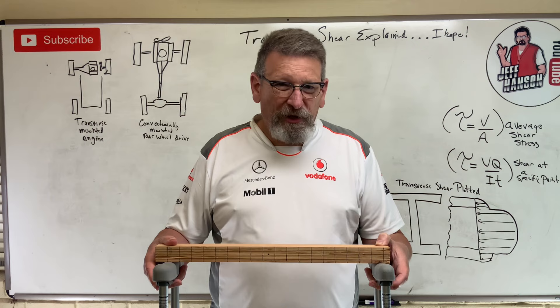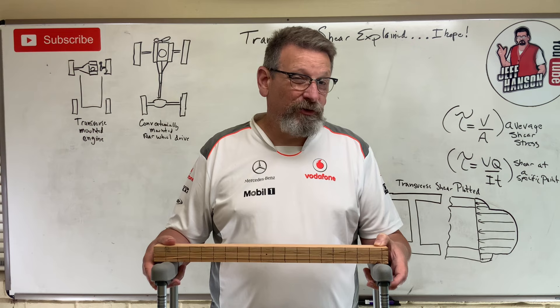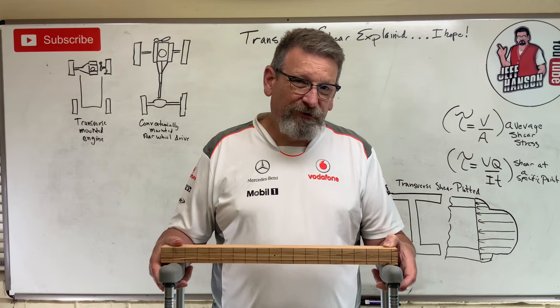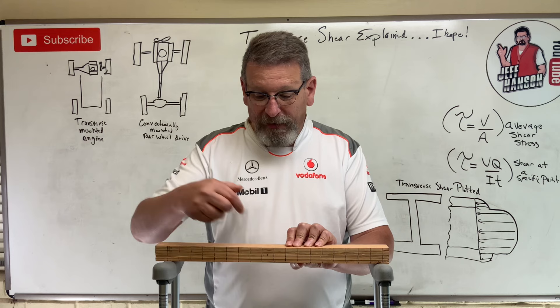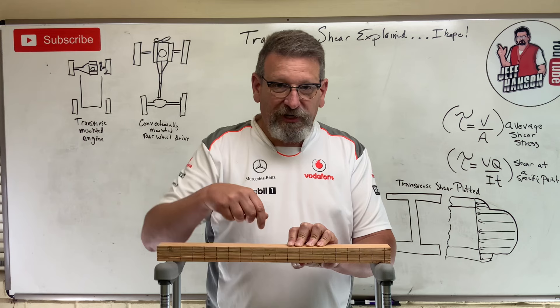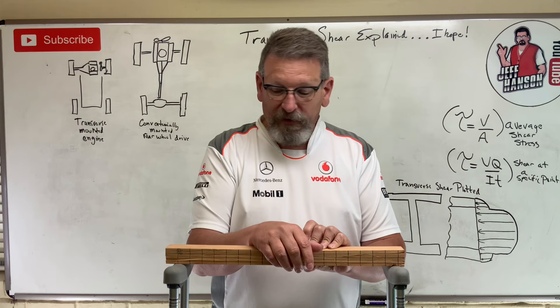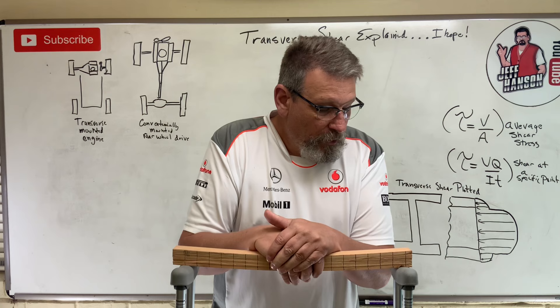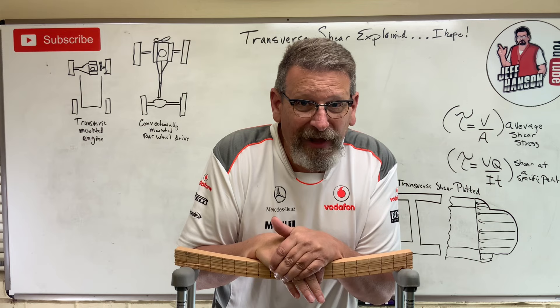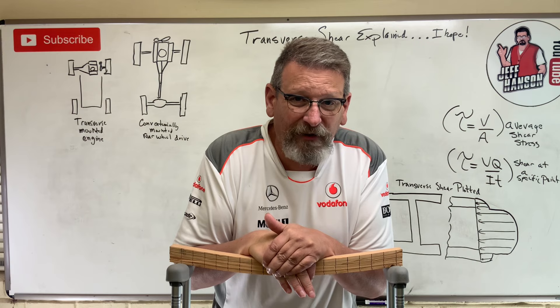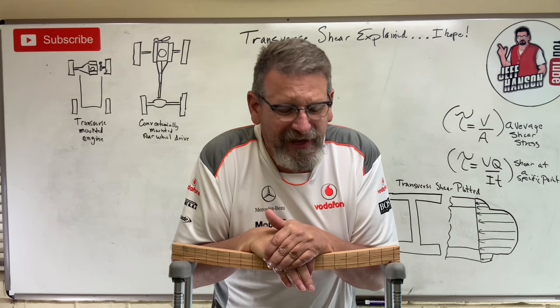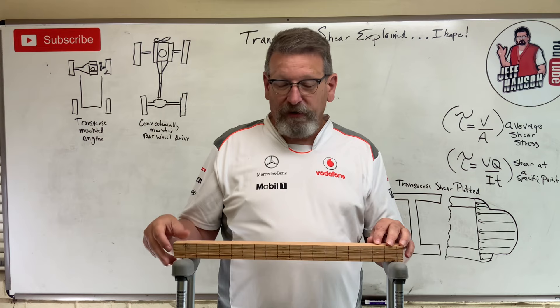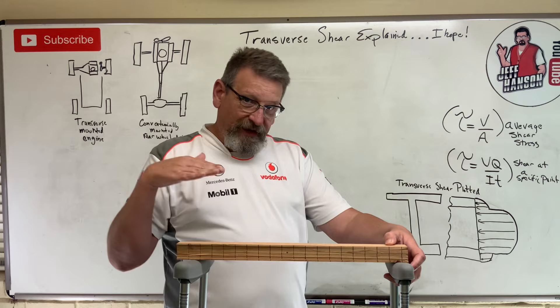Imagine a beam as being made up of a whole bunch of small layers. Remember the slinky example — when we talk about shear due to torsion, each layer slides one relative to the next. I've got a bunch of boards here, sawed into layers, with vertical lines drawn on them. As I put a load on this board and it deflects, look at the ends — those lines that were straight up and down are segmenting: they're sliding one relative to the next. That is transverse shear.